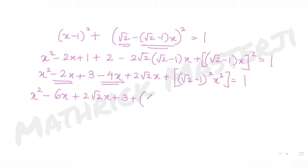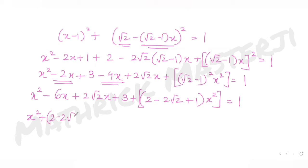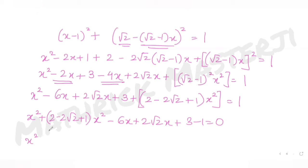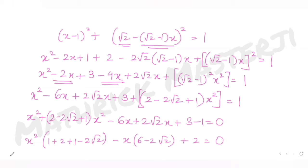Collecting the x² terms: 1 + (2 + 1 - 2√2) = 4 - 2√2 for the x² coefficient. The x coefficient becomes -(6 - 2√2) and the constant is 1. Dividing everything by 2 gives: (2 - √2)x² - (3 - √2)x + 1 = 0.